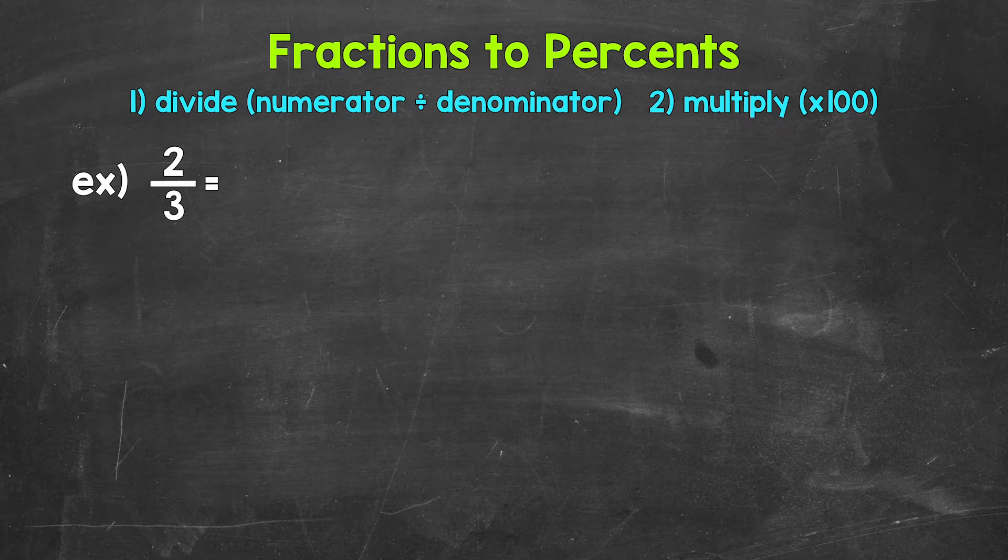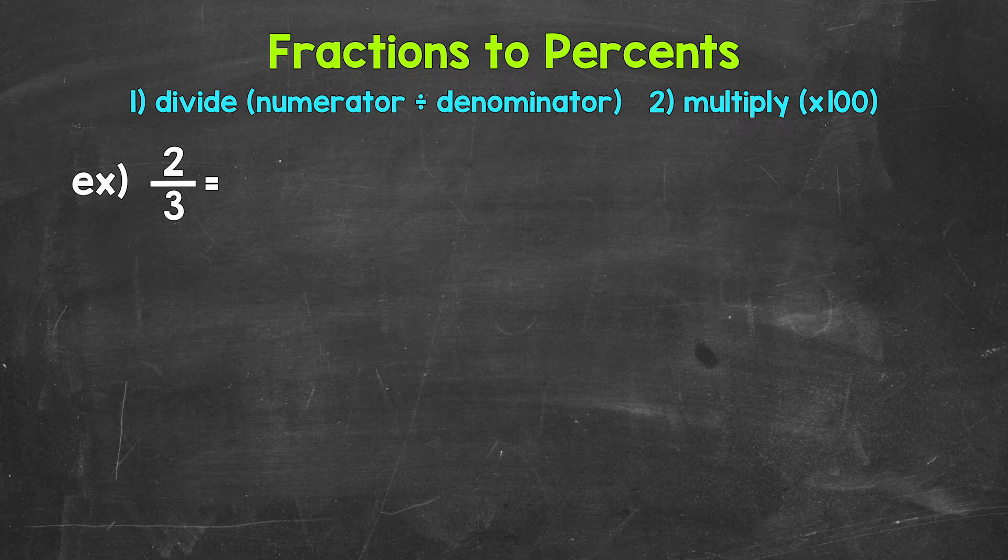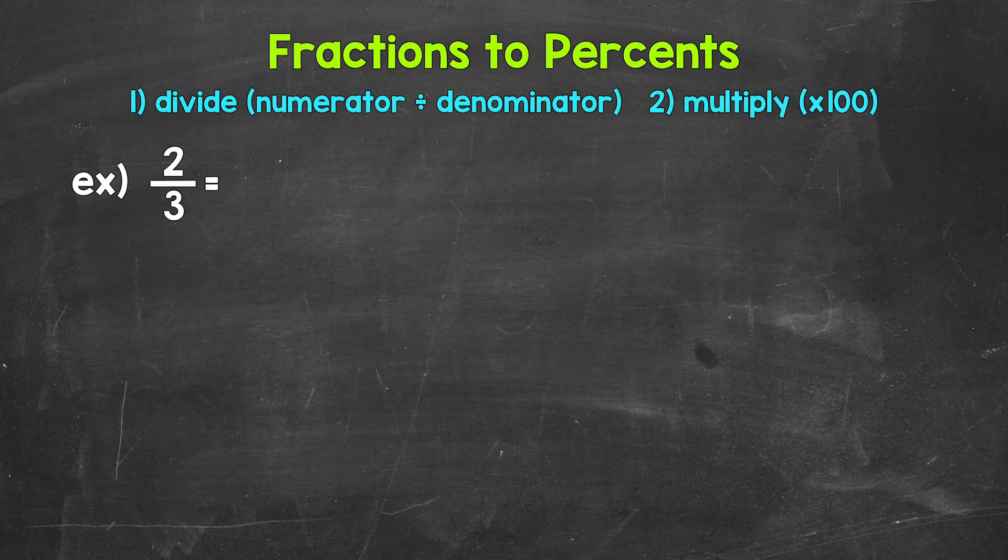Once we have that decimal, we convert it to a percent by multiplying it by 100. And a quick way to multiply by 100 is to move the decimal twice to the right. So we need to start by converting this to a decimal by dividing.